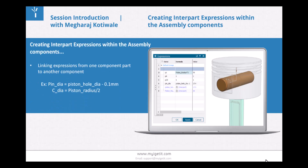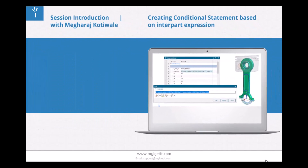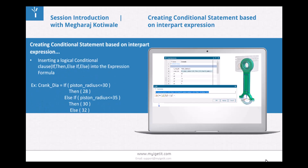The next topic is creating interpart expressions within the assembly component. Here we will learn how to link expressions from one component to another. For example, pin dia equals piston hole dia minus 1, where pin dia is from one component and piston hole dia is from another component in the assembly. We'll also learn how to insert logical conditional clauses — if, then, if-else, then-else — into an expression formula.